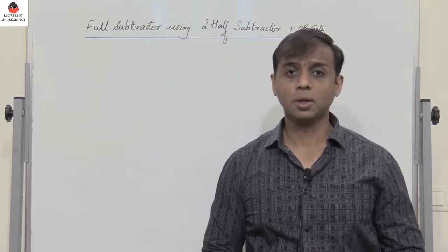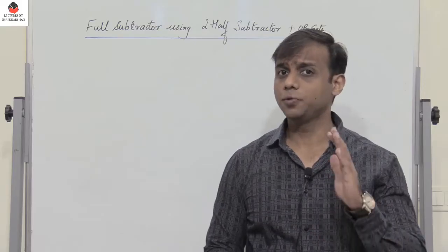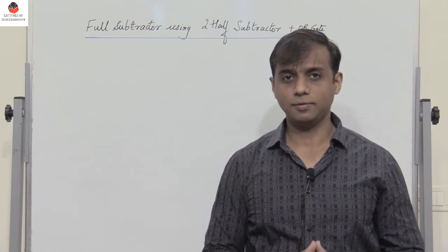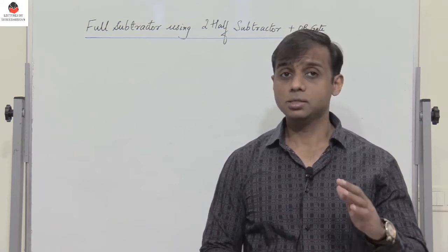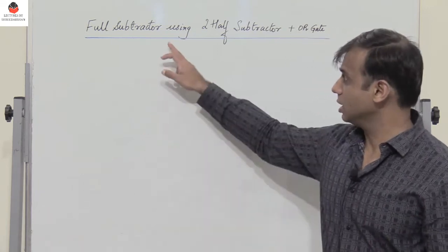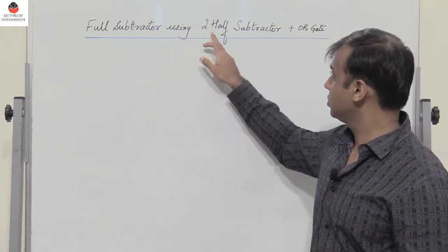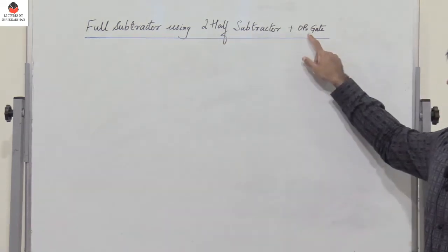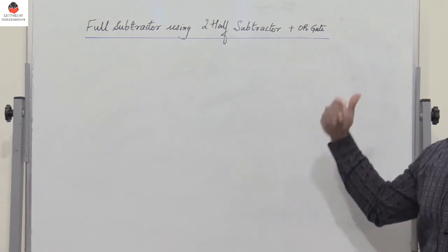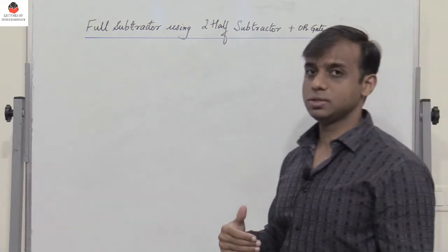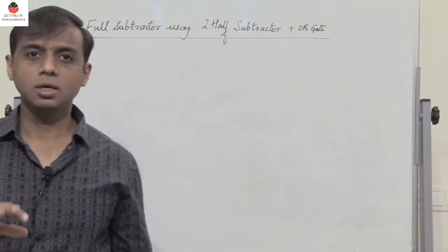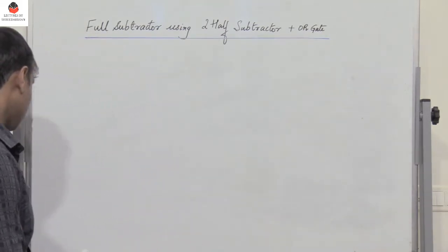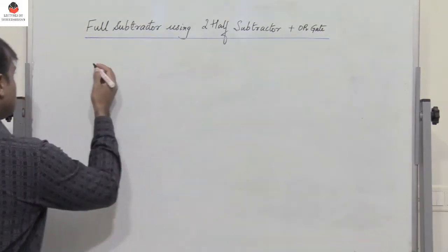Hello friends and students. We know that a full adder can be implemented using two half adders, and similarly a full subtractor can be implemented using two half subtractors along with an additional OR gate. Now how can we do that? We shall see. So let's first check out the truth table of a half subtractor.